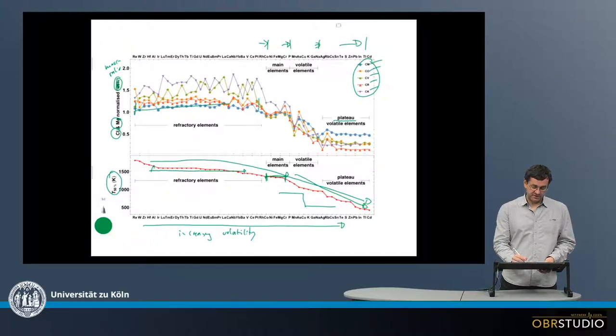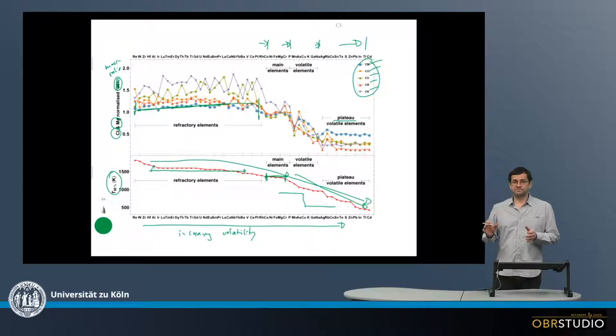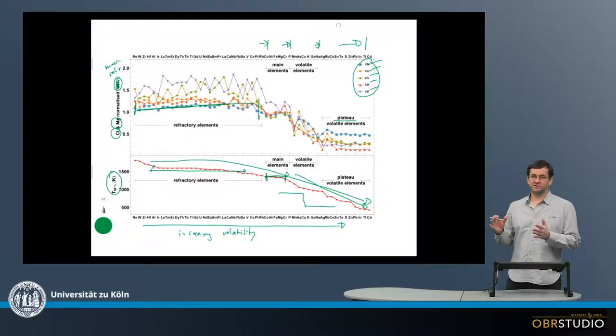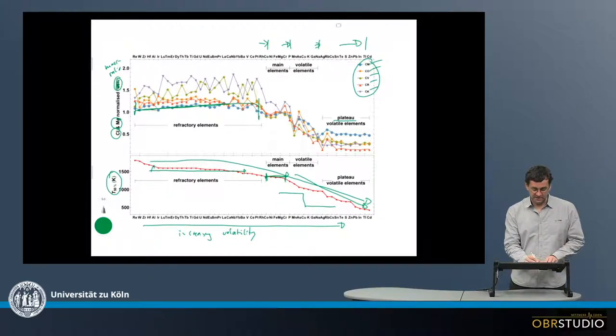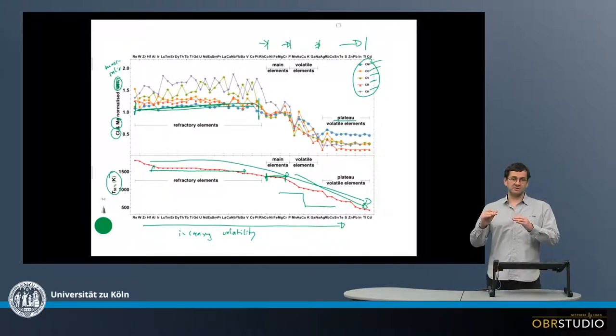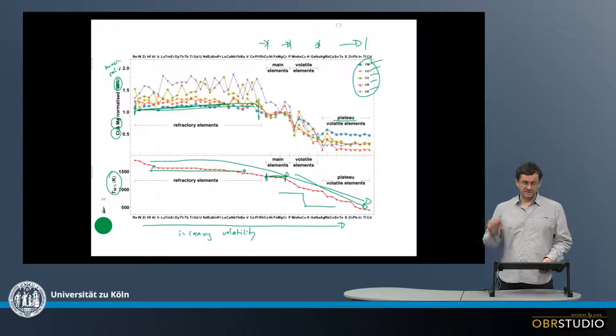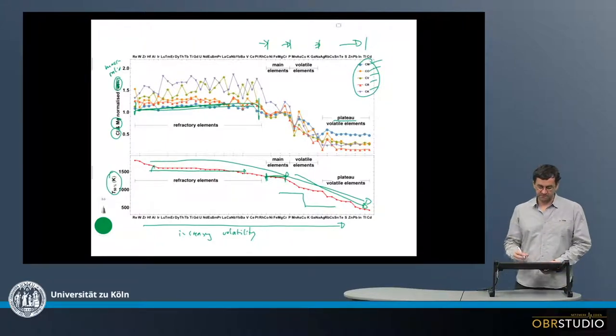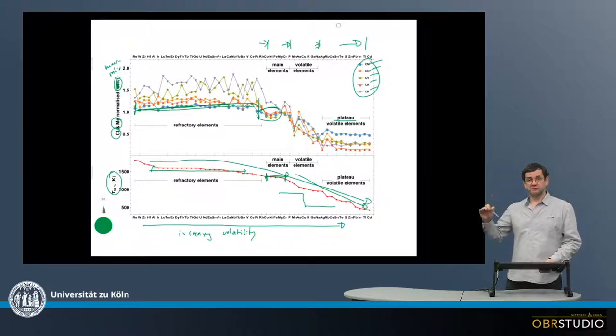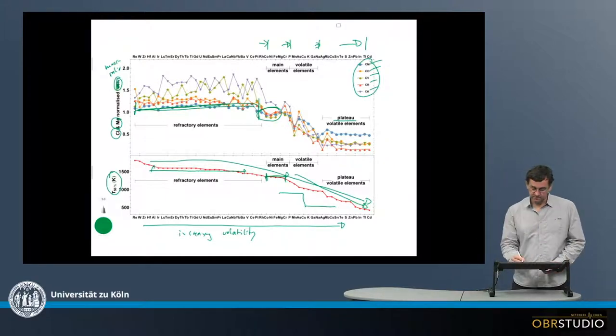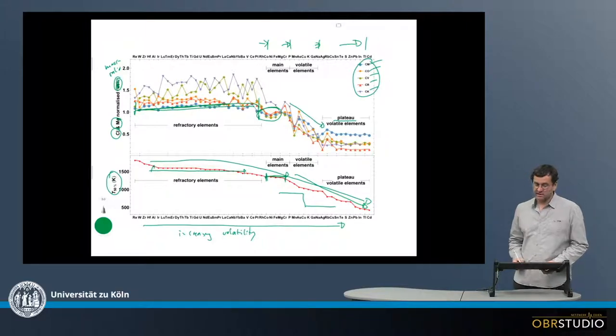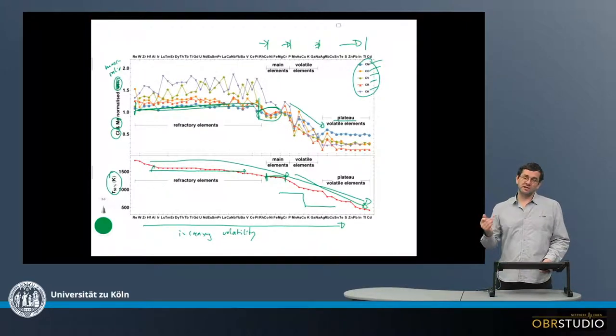When we look at the refractory elements, they have all about the same concentrations. Not among the various chondrite groups, but within a single chondrite group. If you look at the CM chondrites down here, the refractory elements have all about similar concentrations. So there's no visible fractionation. It's not about the details. There's quite some wiggle in the CK and the CVs, but we're looking at the overall patterns here. And the same is true for the main elements. They have a little bit lower concentration, but among the individual elements, they are about the same. And then starting with the volatile elements, there's also a decrease in the volatile element abundances.